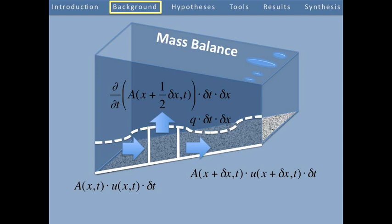This gives us a change in volume stored in that element. In addition to the volume stored, the volume going in and the volume going out, there may be a source term. This represents either a volume sink or a volume source supplied by, say, a conduit or a crevasse. In summary, these expressions provide a volume or mass balance, if we multiply by density, in the subglacial drainage system.